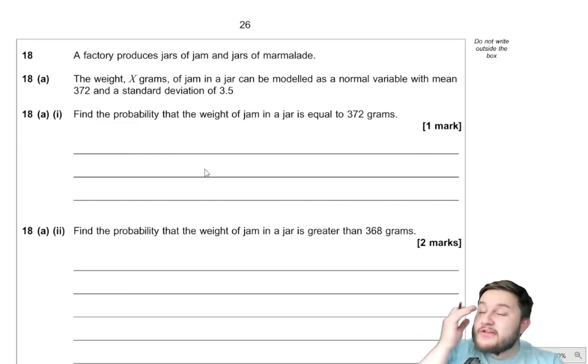Now, this is a question I always love, because it's just sort of a fact that you should know. In the normal distribution, because it is continuous data, the probability that you get an exact value is zero. So the probability that the weight of the jam in the jar is equal to 372, that has to be zero.